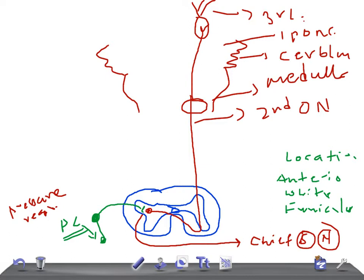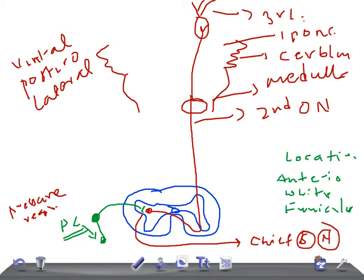While ascending through the brain stem, the number of fibers in the anterior spinothalamic tract is considerably reduced, since most fibers send collaterals to reach the reticular formation of the brain stem. The remaining fibers terminate in the ventral posterior lateral nucleus of the thalamus.